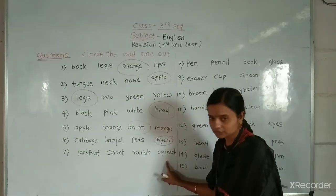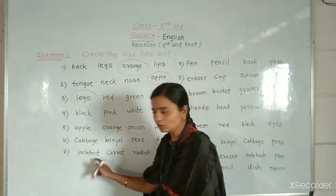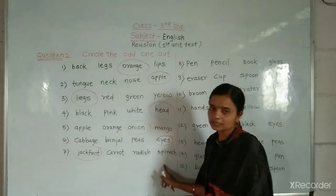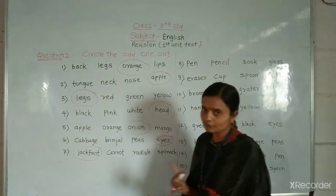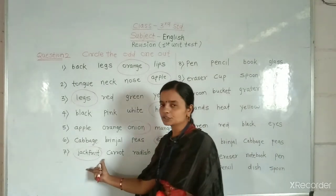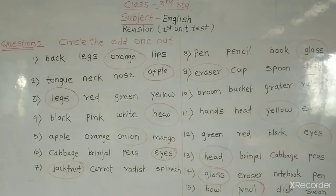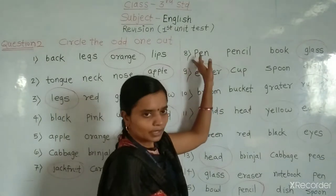Brinjal. These are the name of visitables. And jackfruit is the name of fruit. So now we will circle it. Carrot, radish, peanuts is visitable. But jackfruit is not the name of jackfruit. So jackfruit. So now we will see next.